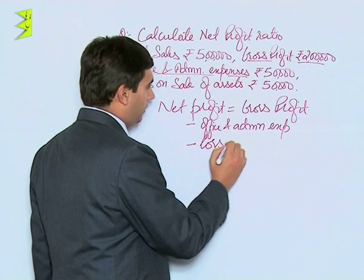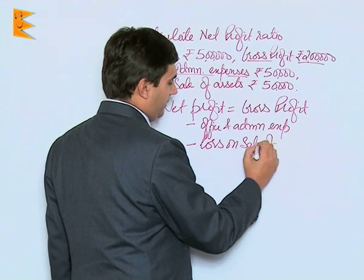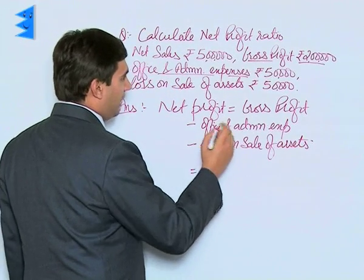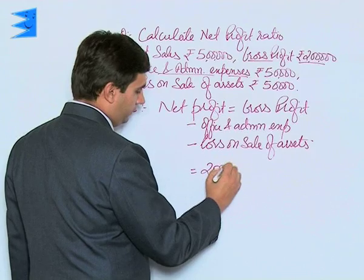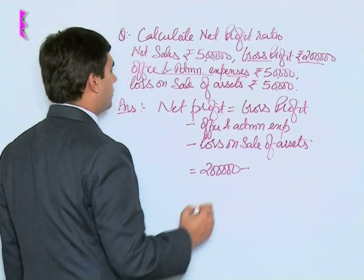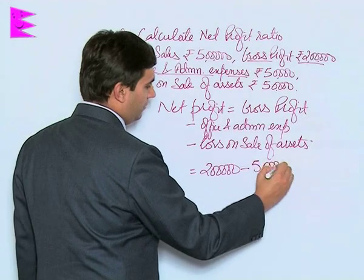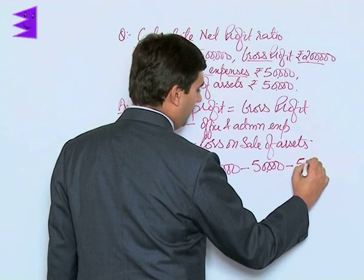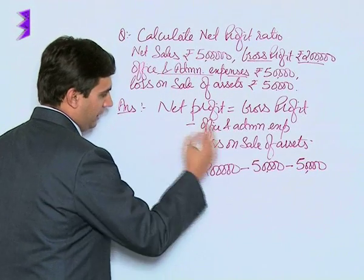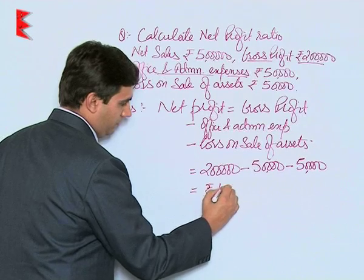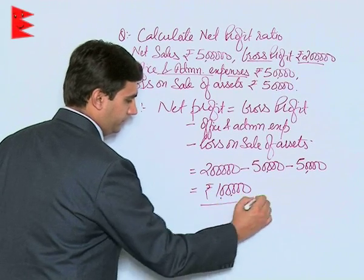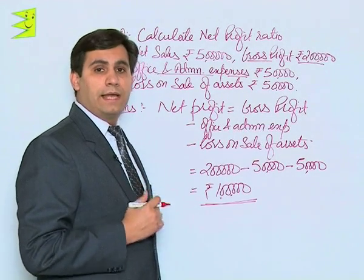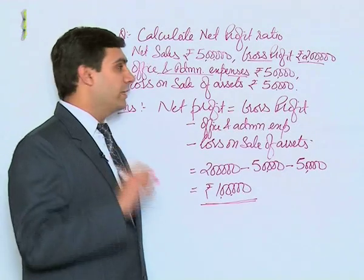So we deduct loss on sale of assets. We will have net profit as: gross profit is 2 lakh, minus office and administration expenses of 50,000, minus loss on sale of asset of 50,000. So we will have a net profit of rupees 1 lakh.